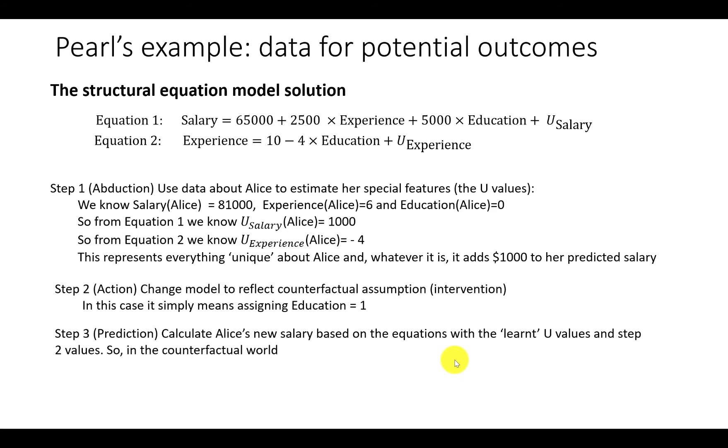Finally, step three is the prediction step, where we calculate Alice's new salary, based on the equations, but with the learned exogenous values and the step two values. So in the counterfactual world, from equation two, Alice's experience is 10 minus four minus two, which is equal to two, just applying equation two. And from equation one, Alice's salary is 65,000 plus two times two and a half thousand plus one times five thousand plus a thousand. And that gives us 76,000.